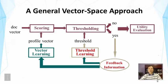Generalizing the vector space model for filtering, the document vector is fed into a scoring module that already exists in a vector space model search engine. The profile is treated essentially as a query, and the profile vector is matched with the document vector to generate a score. This score is passed to a threshold module that outputs yes or no. If yes, the document is sent to the user, whose feedback is then used to adjust both the threshold and the profile vector representation.